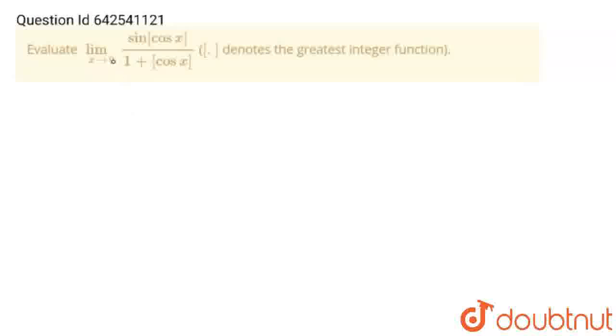Hello students! The question is, evaluate limit x tends to 0, sine of greatest integer of cos x upon 1 plus greatest integer of cos x, where this square bracket denotes the greatest integer function. So let's solve this problem.